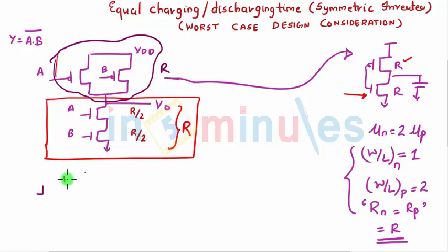Now we know that for NMOS, when W by L was equal to 1, I got a resistance which was equal to R. We just saw that, correct? So if I increase the value of my W by L, we know that R is inversely proportional to W by L, right?